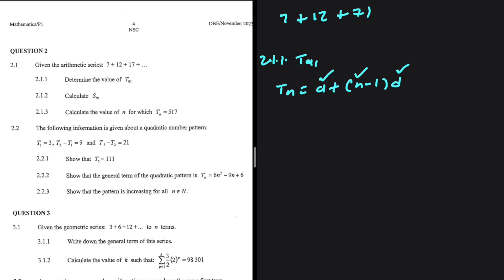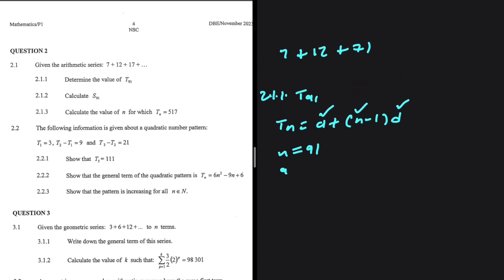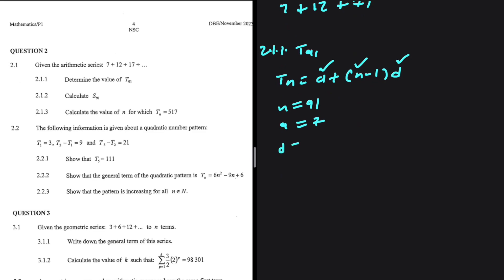N equals 91 in our case, so we have N being equals to 91 because we are looking for T91. A is the first term which in our situation equals 7. So all we need to do is find the common difference.